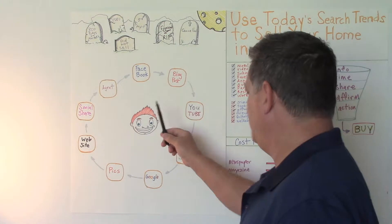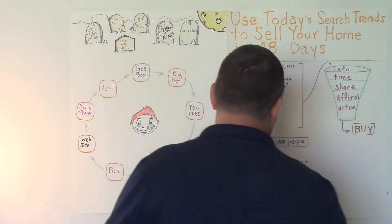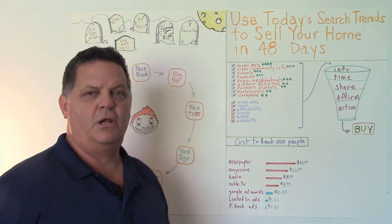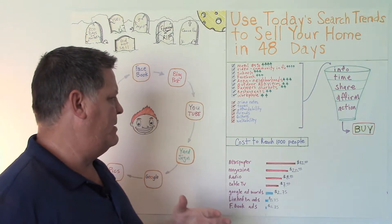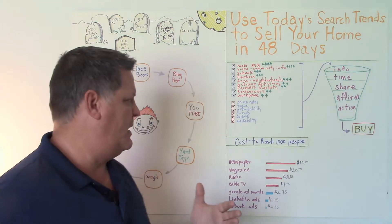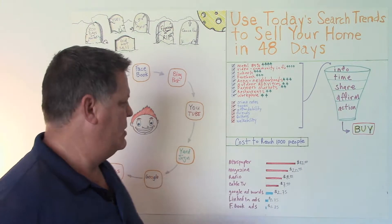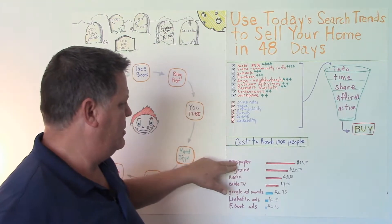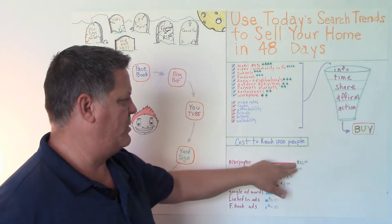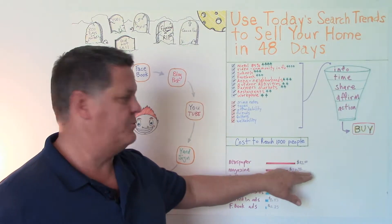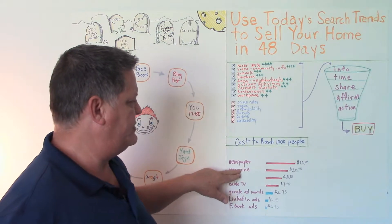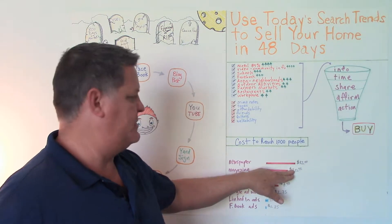And now what I want to talk about is advertising that works. Before we dig into this, I thought it might make sense to just talk about what it costs to reach our buyer and what particular methods are most cost effective. So here on the top we have newspaper. This is cost to reach 1,000 people. With newspaper, it costs around $32 to reach 1,000 people. Magazine is $20 to reach 1,000 people. Radio, $8 to reach 1,000 people. Cable TV, $7.